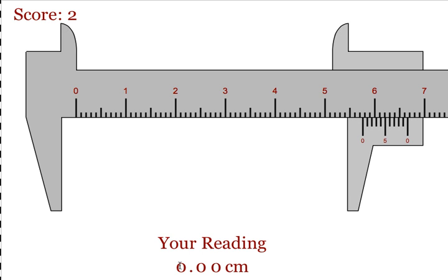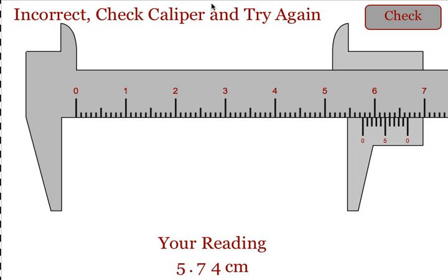So, for instance, with this one, if the student entered 5.7 and then they misread the one that lines up, which is actually the 6, and let's say they put in just a 4 instead, it will say incorrect, check caliper, and try again.